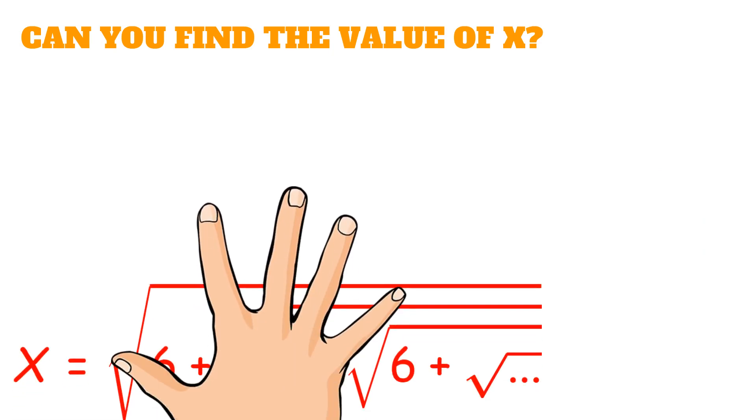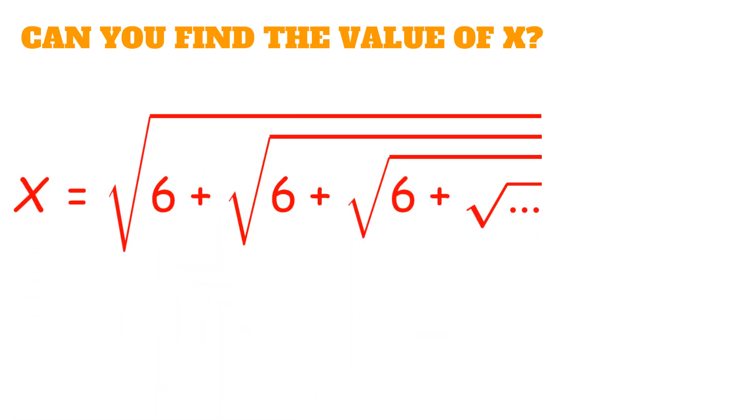The equation is x equals the square root of 6 plus the square root of 6 plus the square root of 6 plus the square root of this expression repeatedly continuing itself.